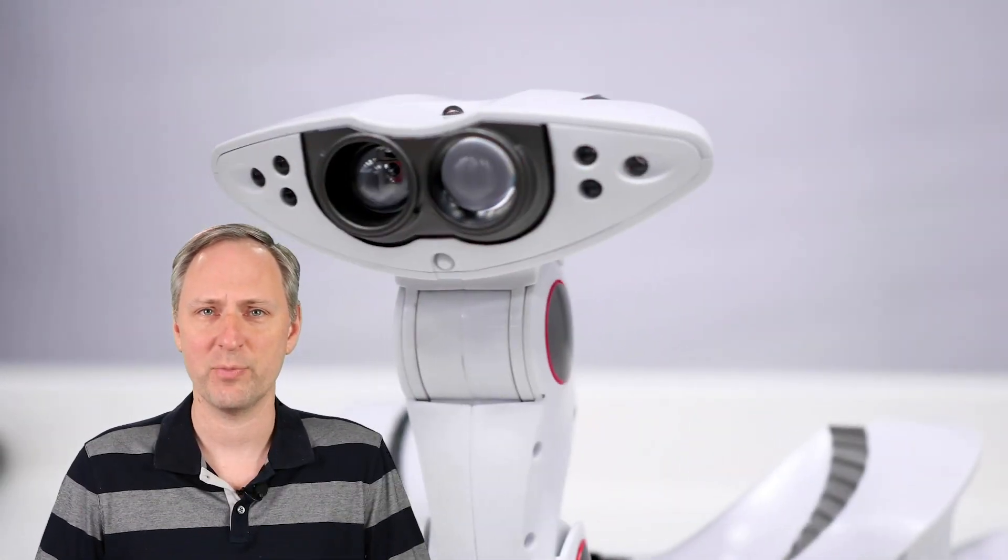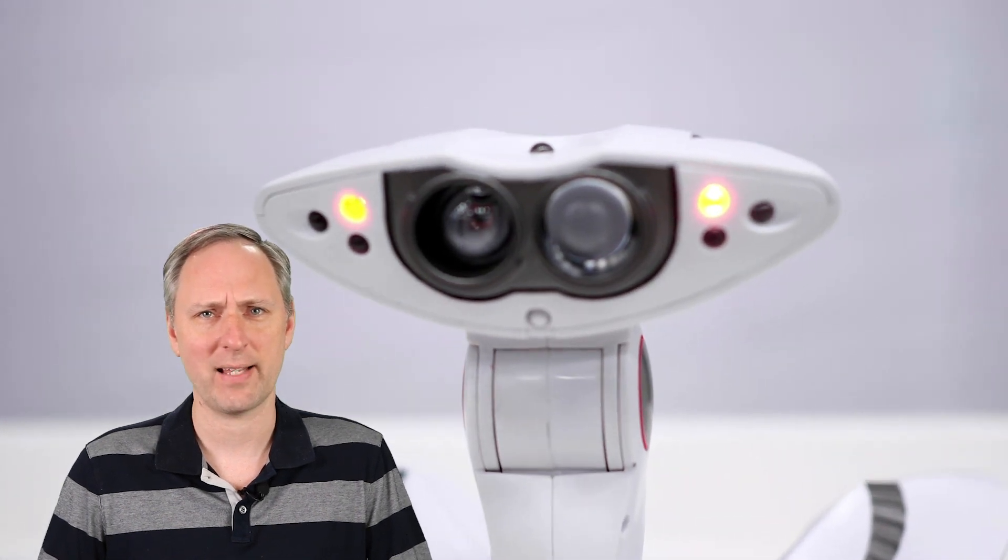Robots need to be able to sense their surroundings, and a common way of them doing that is with eyes made out of cameras. Cameras are handy sensors for a robot because they allow them to see the same sorts of things that people see.